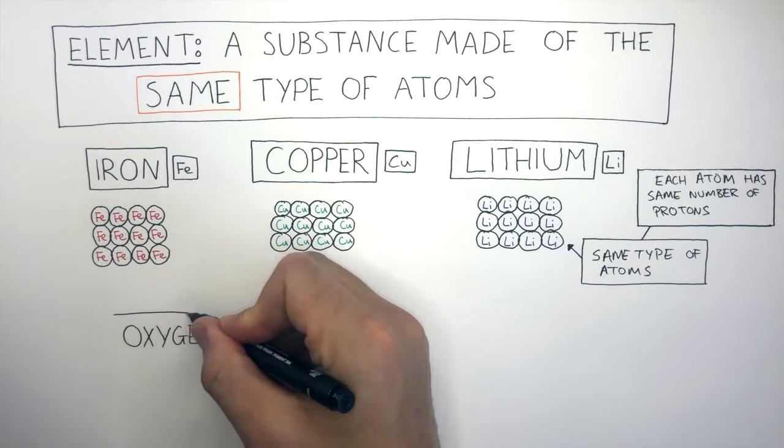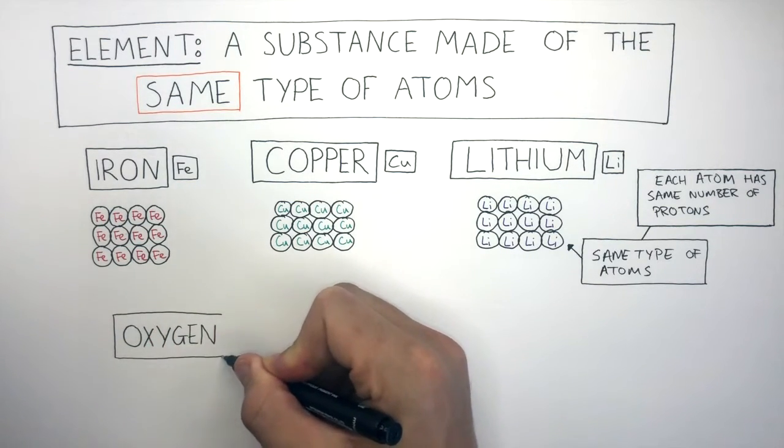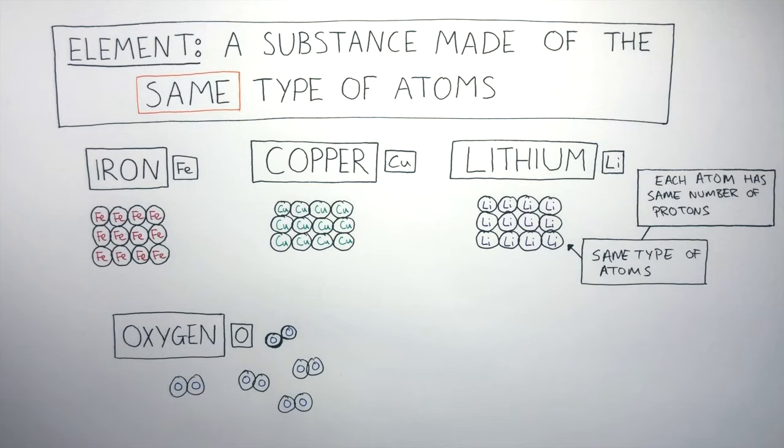Oxygen is a non-metal found in the periodic table. It has the chemical symbol O and it's a gas at room temperature. These oxygen molecules have the same type of atoms therefore this is an element.